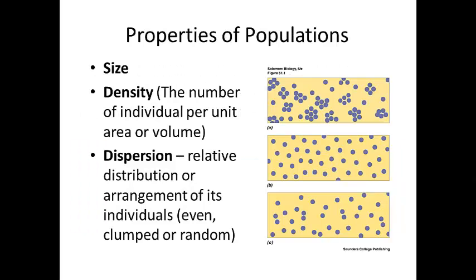Different properties of a population include the size — how large the population is — and the density, which is how many individuals there are in a given area. For instance, New Jersey is a very densely populated state; even though it's very small, it has a large population. Whereas Wyoming is not very densely populated — it's a lot of land and not many people living there.